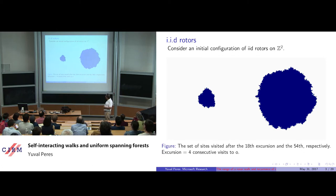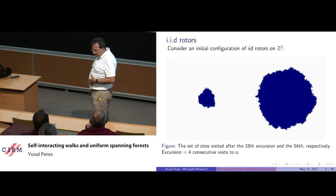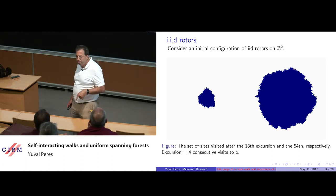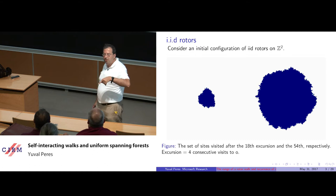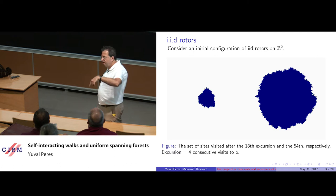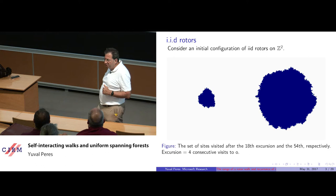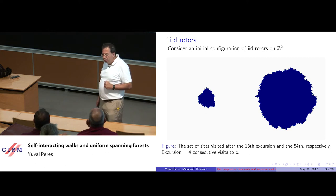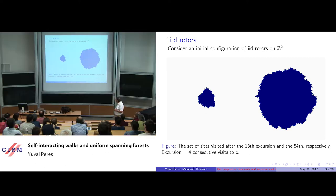We define an excursion of the particle: it starts at the origin, and by definition it has to exit along all four edges and then come back — so it's really the fourth return to the origin. After 18 excursions the visited set looks a certain way, and this is after 54 excursions.